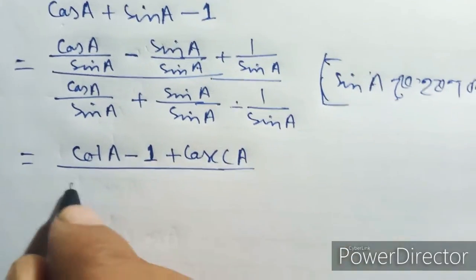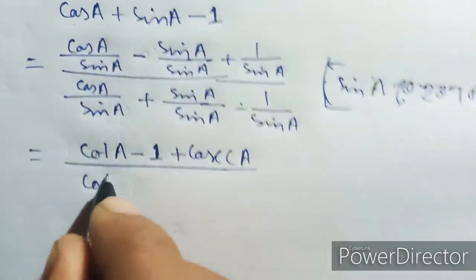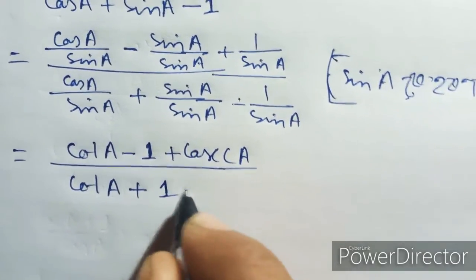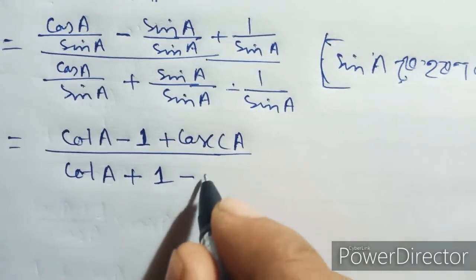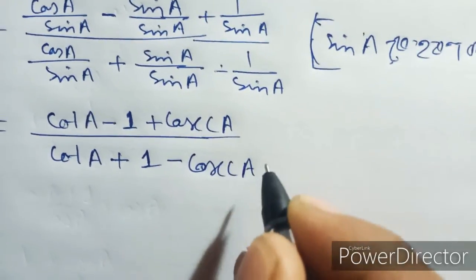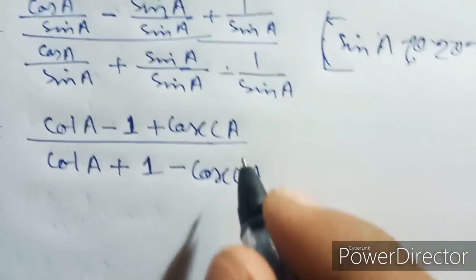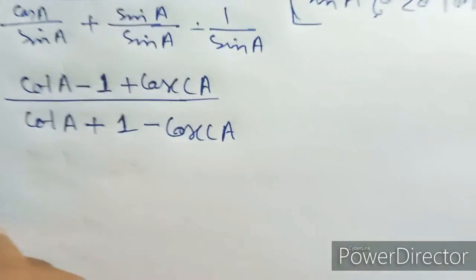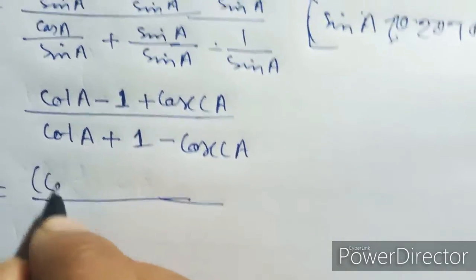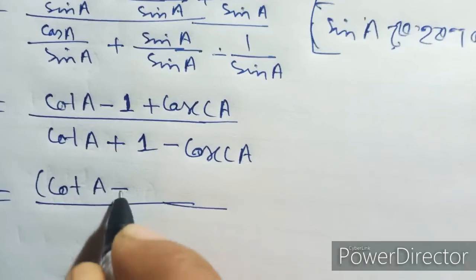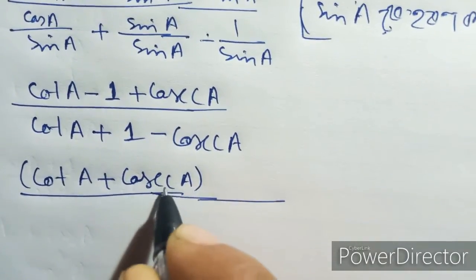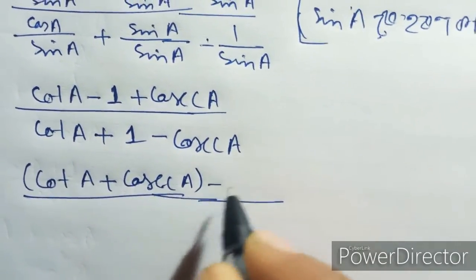cos i by sine equal cot, minus sine by sine is one, one by sine. So: cot minus 1, plus cot plus 1, then cot plus cos k minus one.